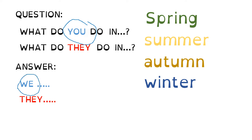We smell flowers. Remember, if in the question you have 'you', in the answer you have 'we'. And if in the question you have 'they', in the answer you have 'they'. What do you do in spring? We smell flowers. Or what do they do in autumn? They celebrate Halloween.